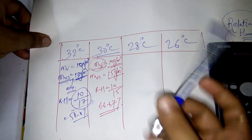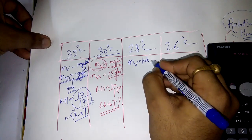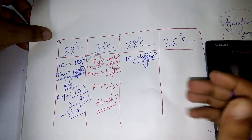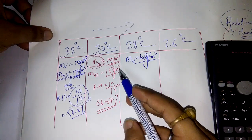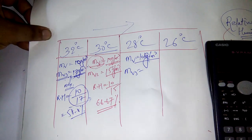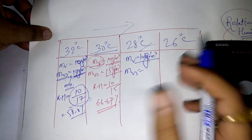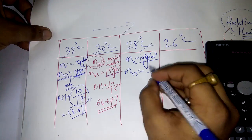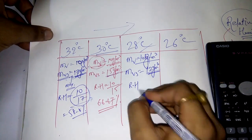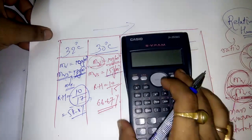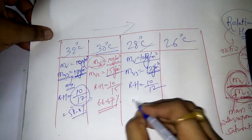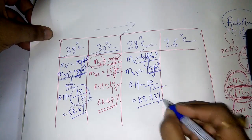At 28°C, MV is still 10 grams per cubic meter — moisture content does not change. But MVS, the maximum vapor air can hold, decreases further. Suppose it is now 12 grams per cubic meter. Then relative humidity is 10 divided by 12, which equals 83.33%.